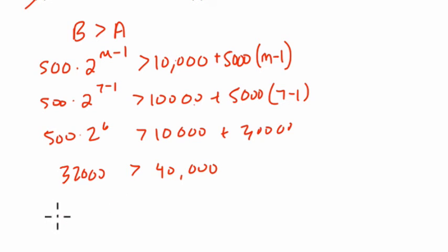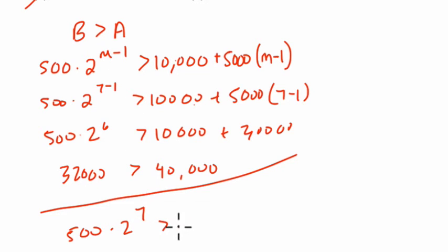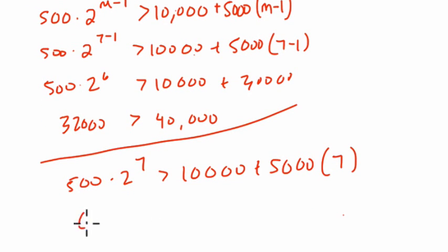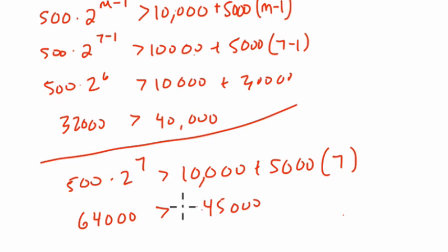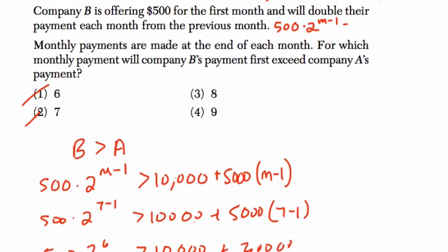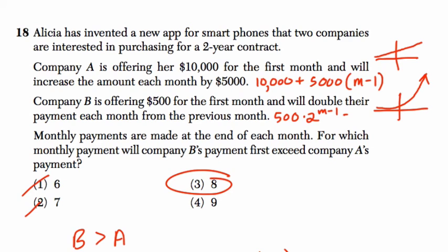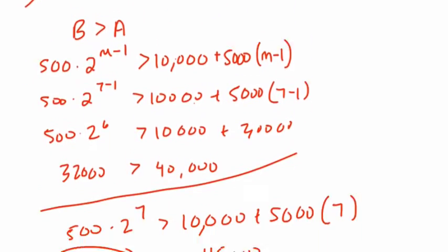So try 8 next. If we plug in 8: 500 times 2 to the 7th — 8 minus 1 is 7. Is that greater than 10,000 plus 5,000 times 7? We can predict it's going to be 64,000 — another doubling beyond 32,000. Is that more than 35,000 plus 10,000? Yes — 45,000. So now it has far exceeded it, because doubling grows at a faster rate. It's exponential — you can imagine the graph shooting up in an exponential curve versus a linear graph. Eventually exponential will surpass linear because it curves up so quickly. So here, that answer choice works, and plugging in is the most friendly strategy.